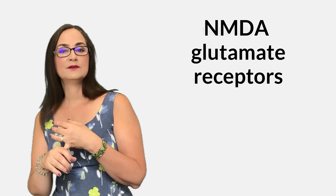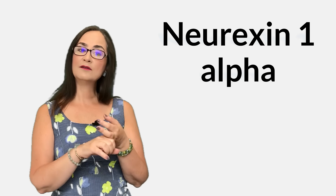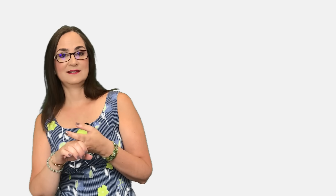Gabapentin also interacts with other receptors in the brain, like NMDA, glutamate receptors, norepinephrine 1-alpha, and thrombospondins. All of these mechanisms contribute to the effect of gabapentin in reducing painful sensations.